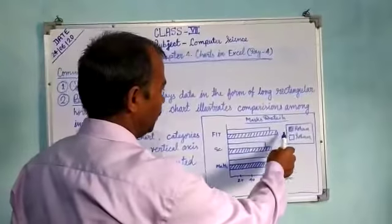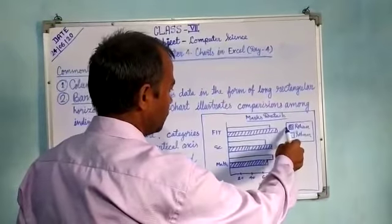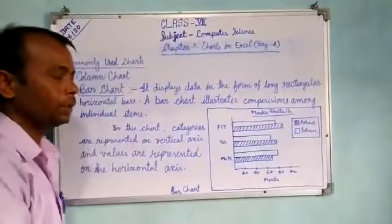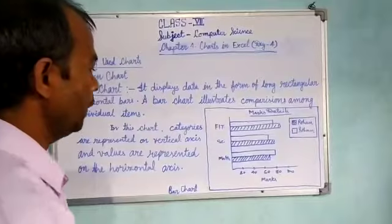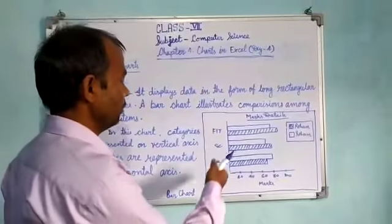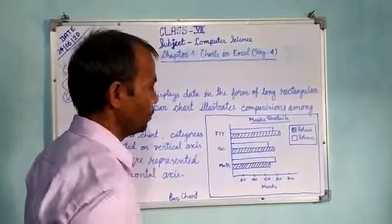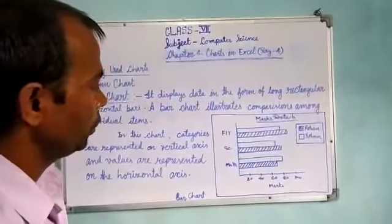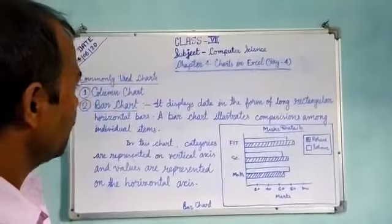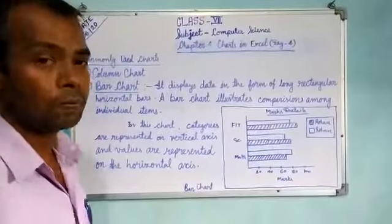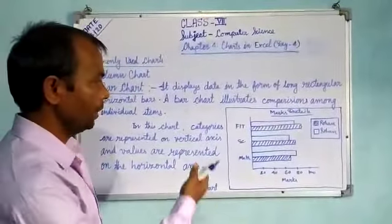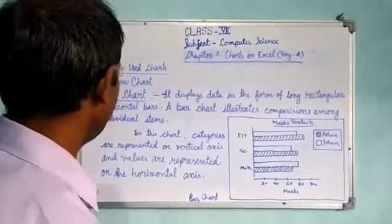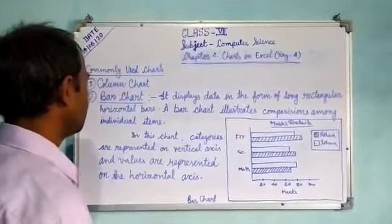Here we have individual items — here are the Romans and so on — two items, and the chart does comparisons between these individual items. By the help of these bar charts we can be able to do comparisons among the individual items.